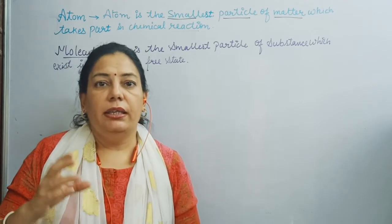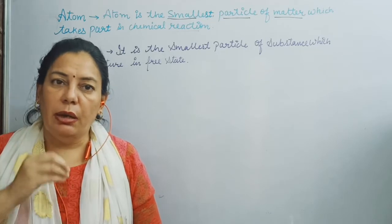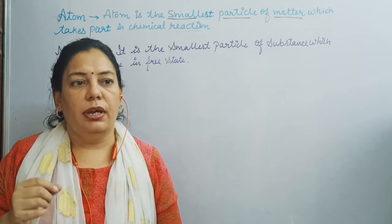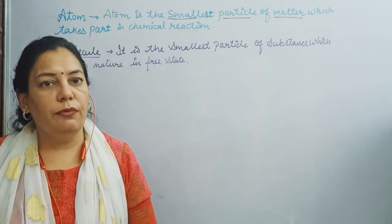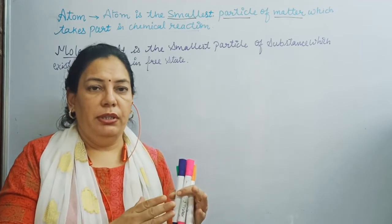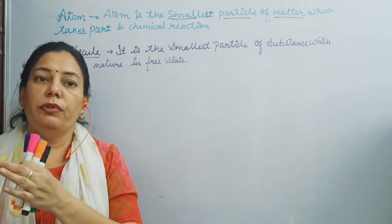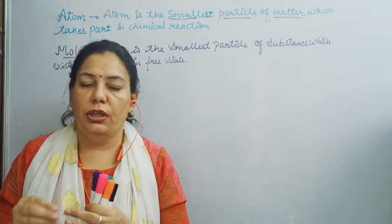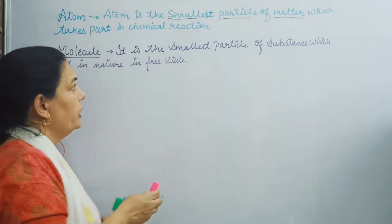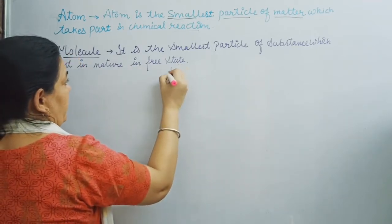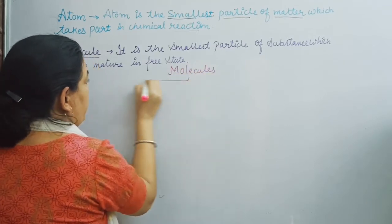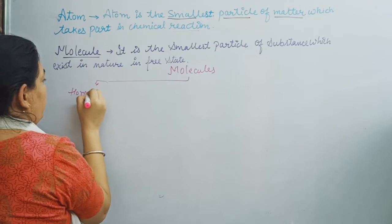Now, depending on whether similar elements or different elements of atoms react with each other, and on this basis — whether similar kinds of atoms or atoms of different elements are present in the molecule — we can classify molecules into two categories. The first is homoatomic molecules.